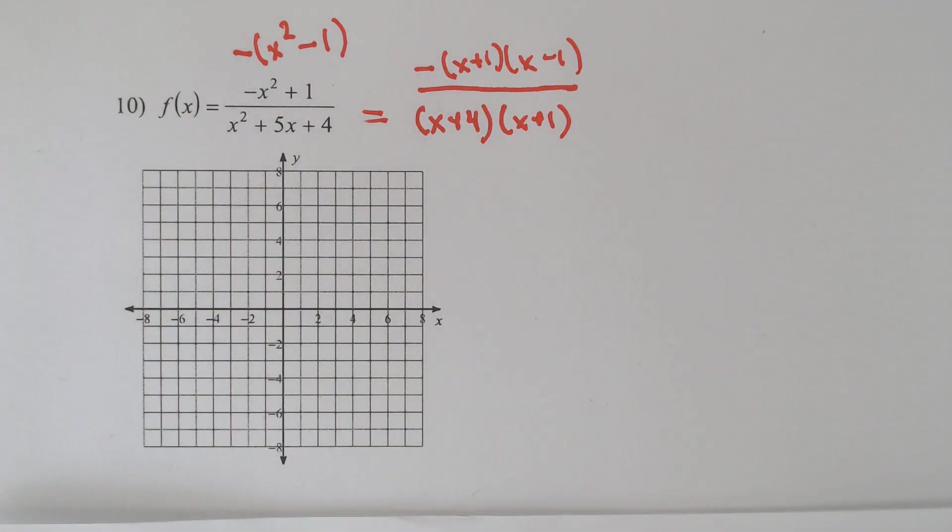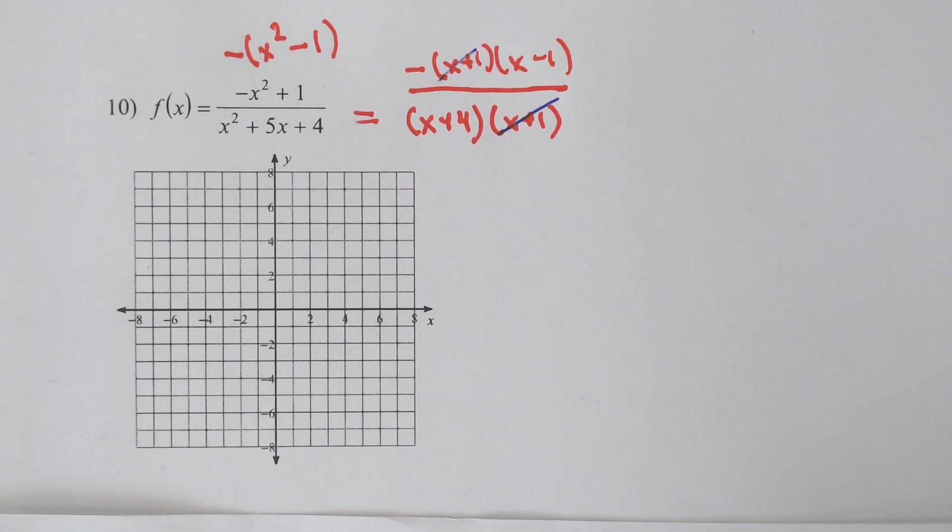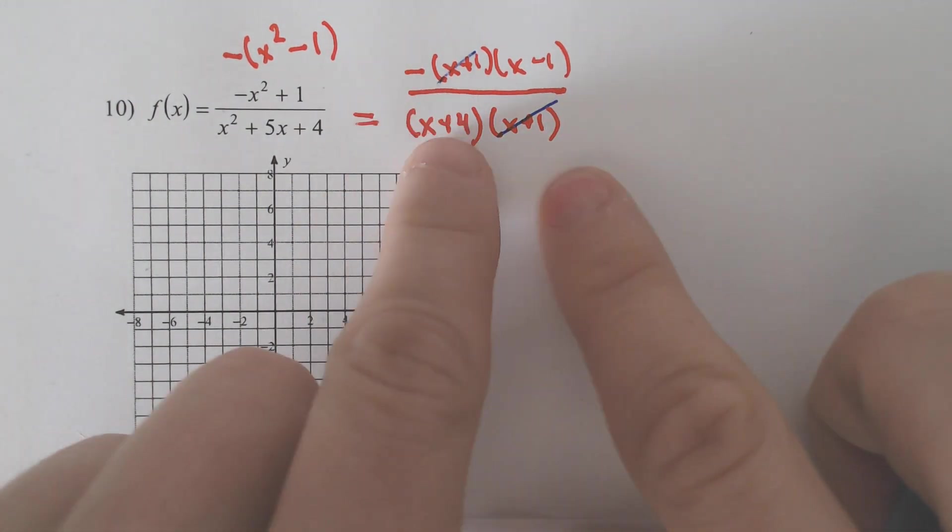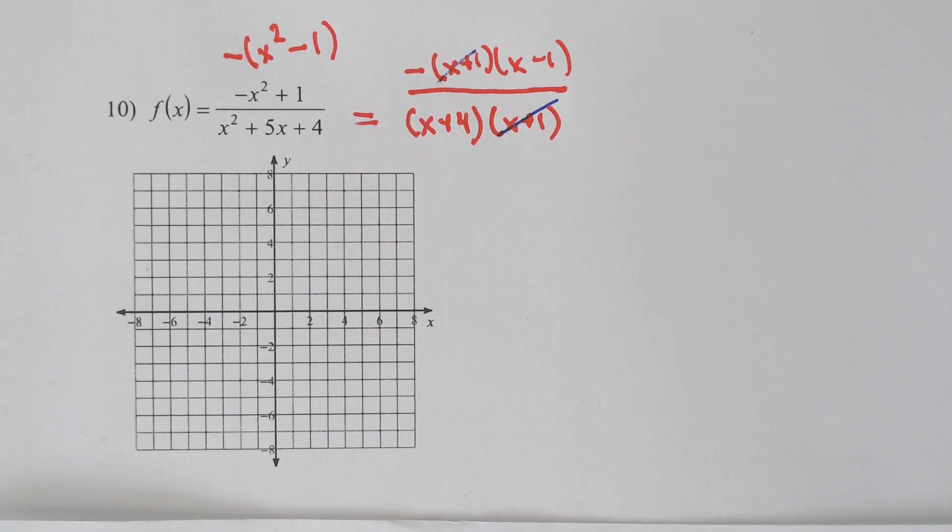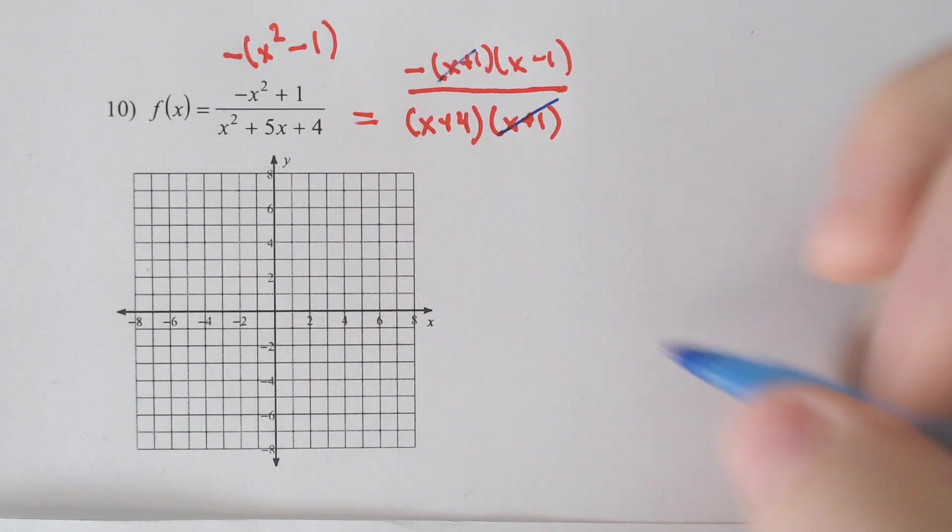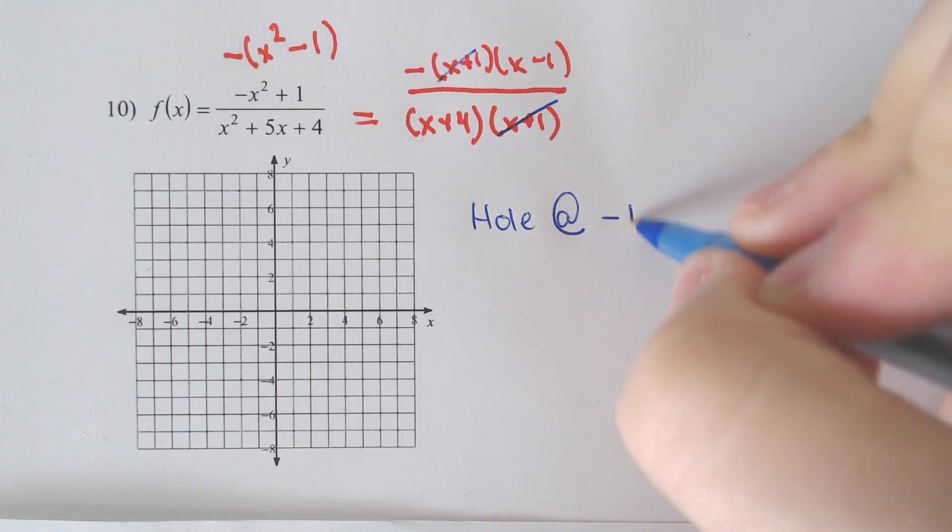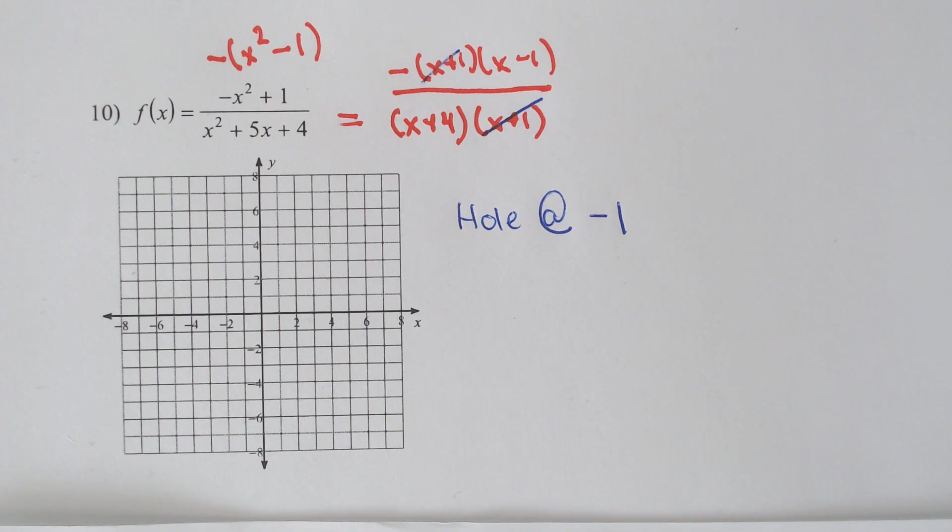Okay, now here the x plus 1s will cancel out, which means that this goes from being what would have been a vertical asymptote at negative 1 to now a hole. Anytime an asymptote or something cancels out, you will have a hole at negative 1, or a point of discontinuity—that's just another name for it.